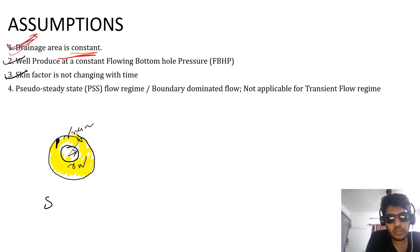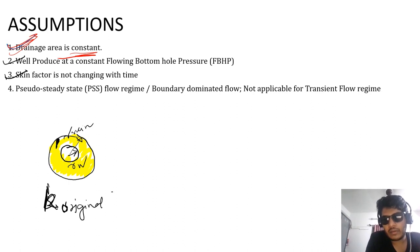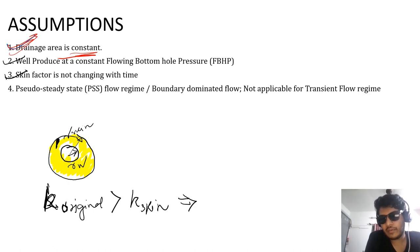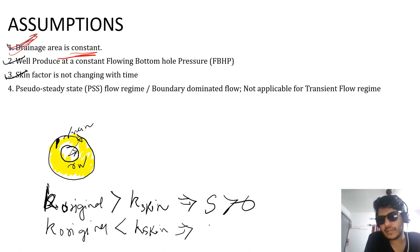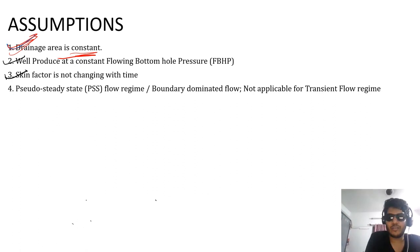If the original permeability k-original is more than k-skin, then skin is positive. And if k-original is less than k-skin, that means it is a stimulated well with skin less than zero. Coming to the fourth point: